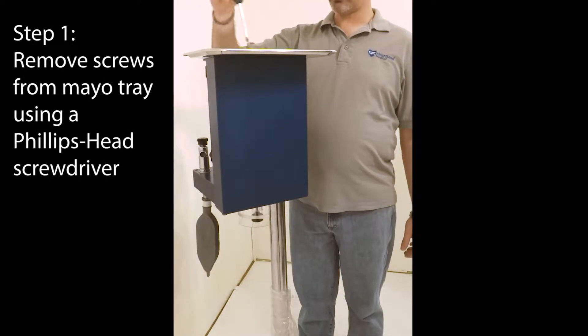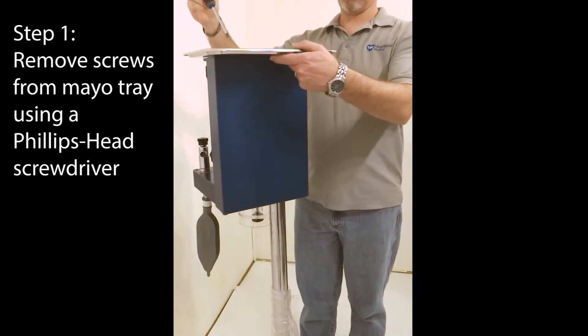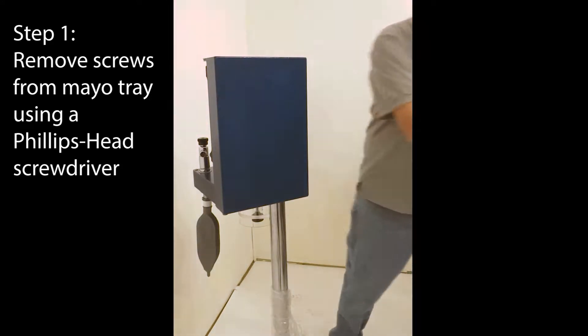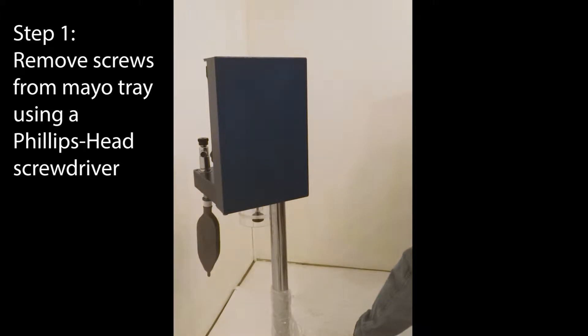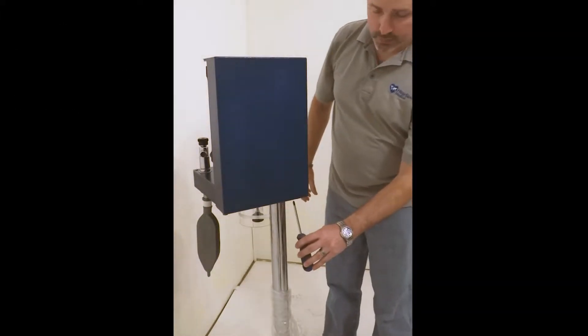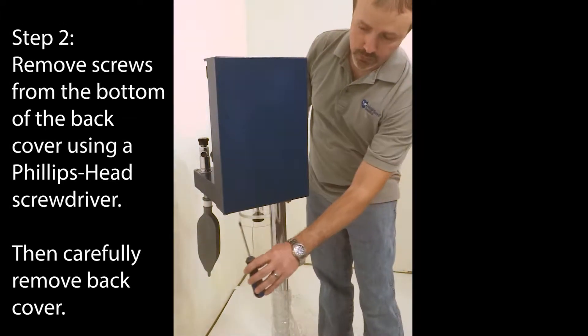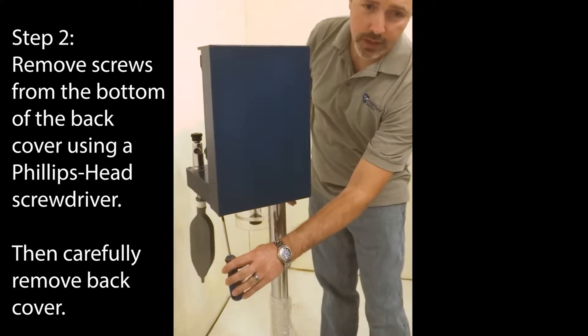First, you will remove the two screws from the top of the anesthesia machine to remove the mayo tray. Next, you will remove the two screws from the bottom of the anesthesia machine.